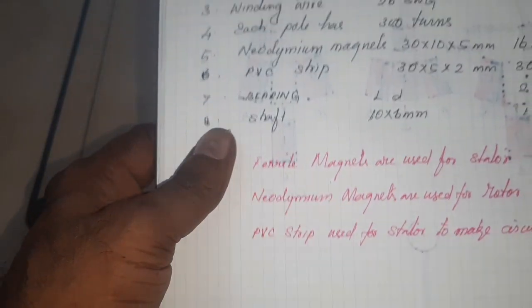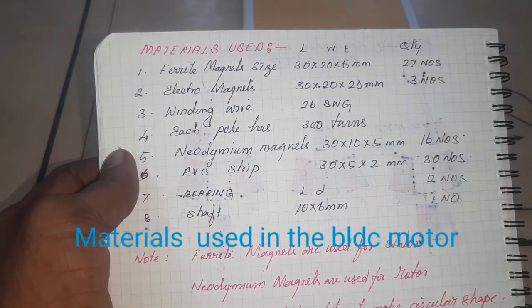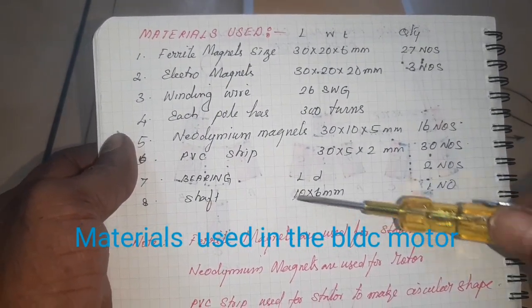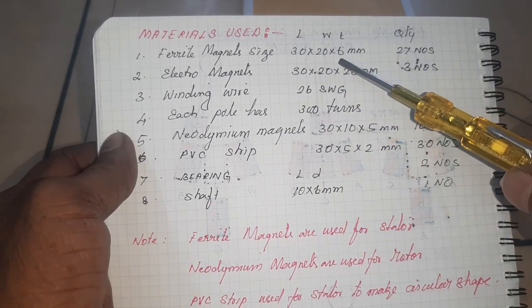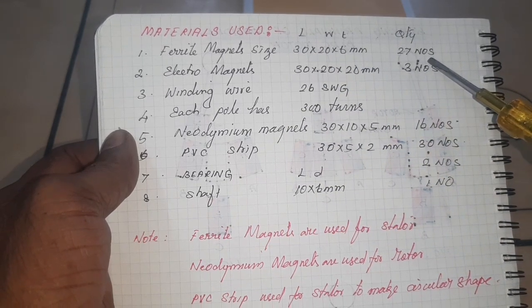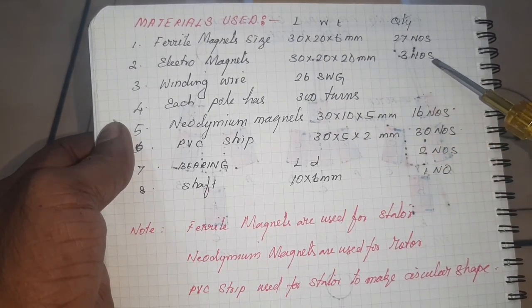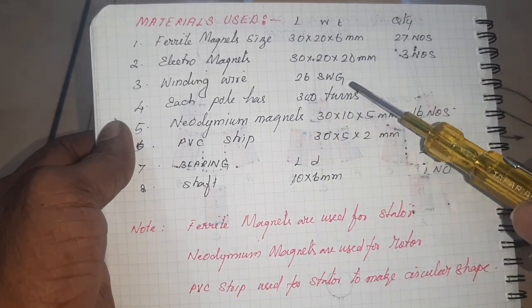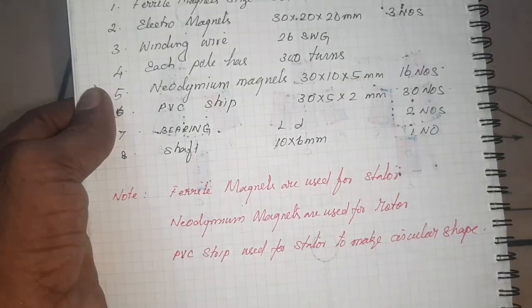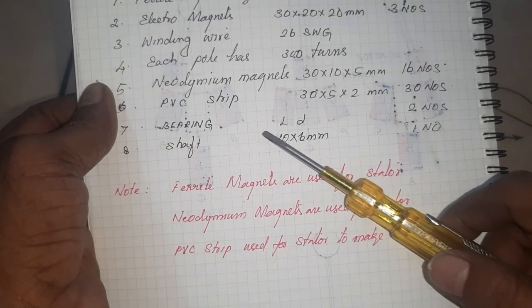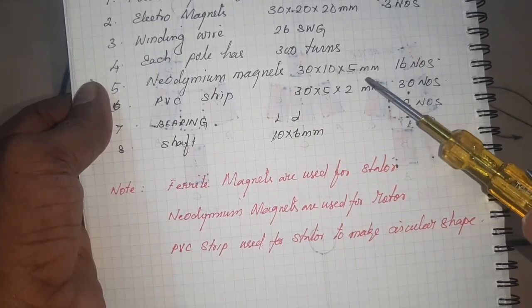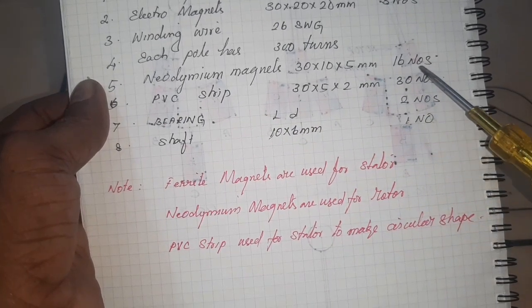What are the materials used in the toroidal BLDC motor? Ferrite magnet 30 x 20 x 6 mm, 27 numbers. Electromagnet 30 x 20 x 23 numbers. Winding wire 26 SWG each. Neodymium magnets 30 x 10 x 5 mm, 27 numbers.